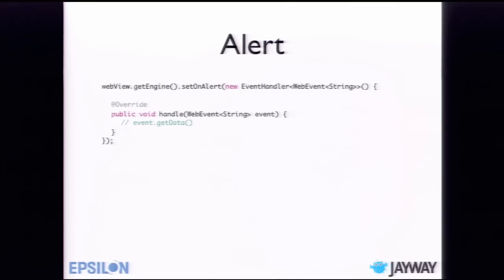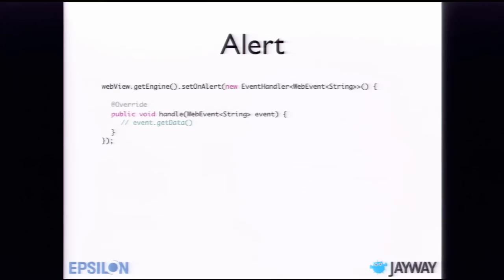Showing alerts is as easy as registering an event handler. Every time the JavaScript alert function is called, we get a callback to our method. We receive an event and the data of that event is the alert message, so we can display it any way we want.